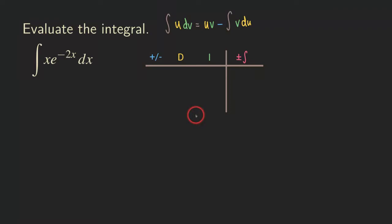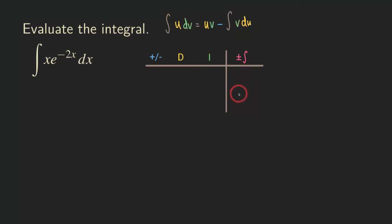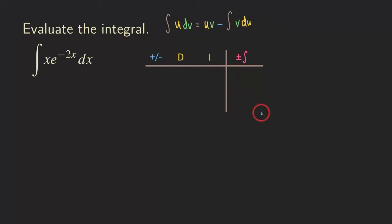Regarding the strategy for choosing u, in general we want to choose a u that's easy to differentiate, and hopefully we get a simpler function when we differentiate. For the I column — the integration column, the dv column — we choose something that's easy to integrate. And hopefully, once we get du and v, this resulting integral can be integrated easily. When that happens, we stop the integration by parts process and write down the answer.